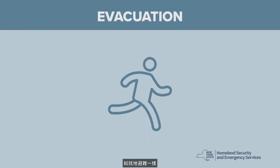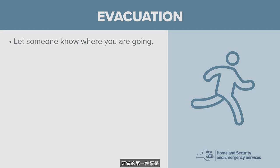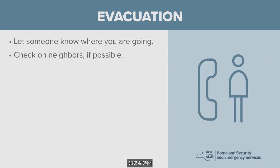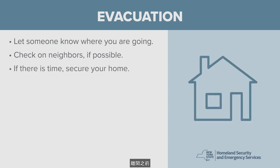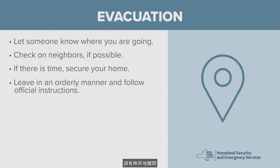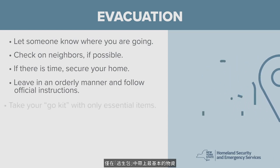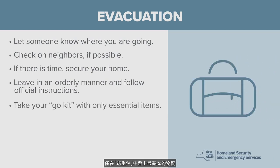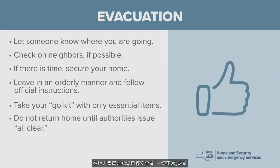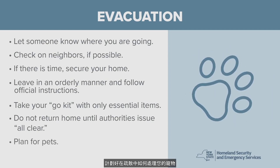In an evacuation, the first thing to do is let someone know where you are and where you plan on going. If you have time, check on neighbors. Before you leave, secure your home by moving valuables to a safe location, turning off utilities, locking doors and windows, and boarding up the home. Leave in an orderly manner and follow only official instructions. Know your destination and routes in advance. Take your go-kit with only the most essential items — water, food, flashlight and batteries, first aid kit, medications, cash, etc. Do not return home until local authorities advise you that it is safe. And plan on what to do with your pets in an evacuation — check that where you are going accepts pets.